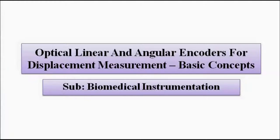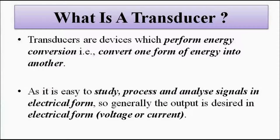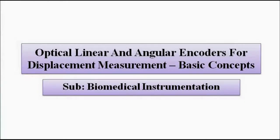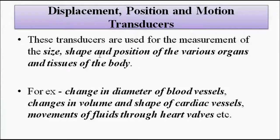In this video we are going to discuss linear and angular encoders, which are based on optoelectronic methods used for measurement of displacement. A transducer or sensor is a device which performs energy conversion — one form of energy into another — and we want the output to be in electrical form, voltage or current. Here we want to measure displacement using optical light signals and convert that light signal into a suitable electrical signal.